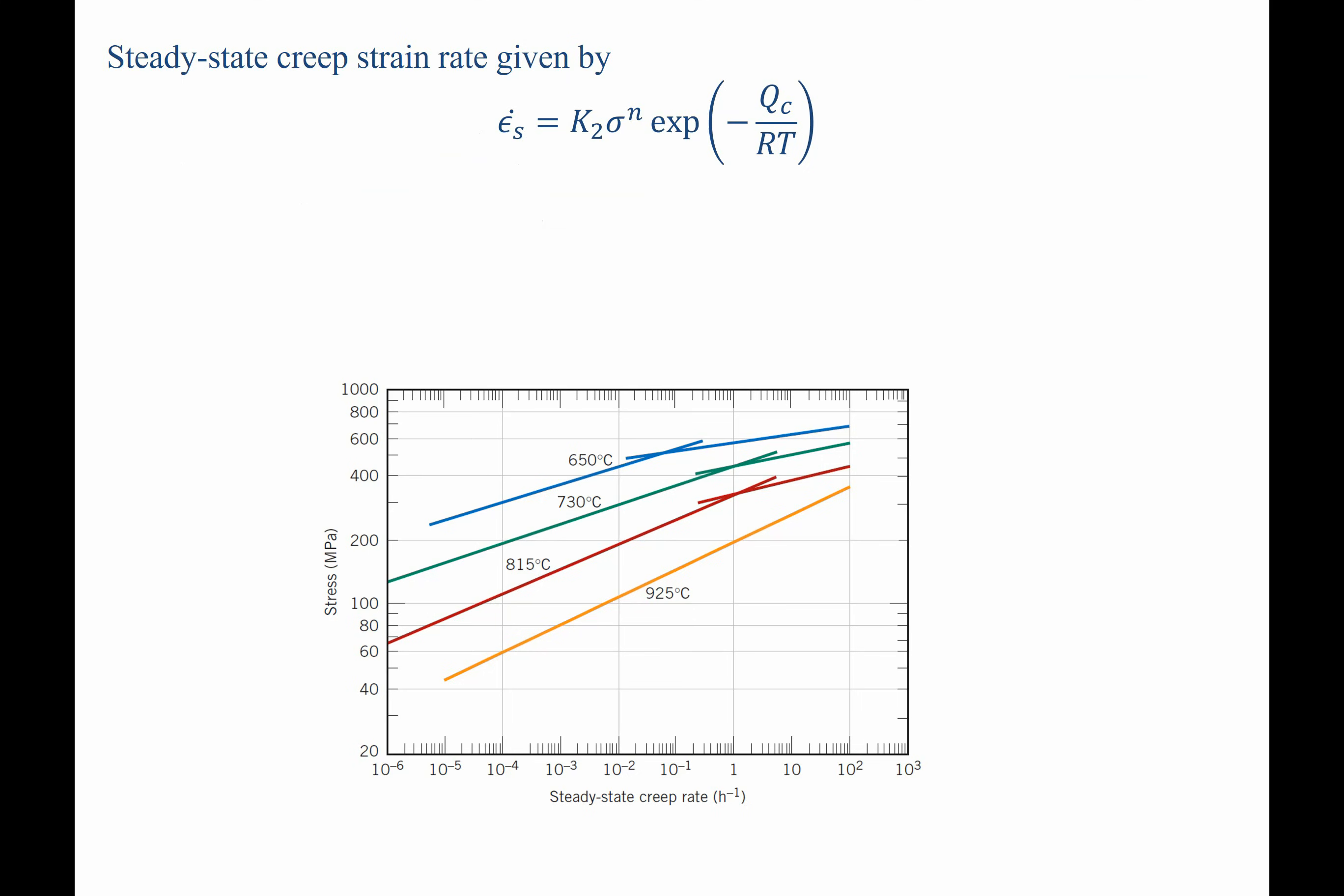We know that the steady state creep strain rate expression is given as follows. We have two terms in front of the exponential. We have the exponential term. Now fortunately, we know that k sub 2 and sigma raised to the n, none of that is temperature dependent. So we can replace it with a new pre-exponential variable. Let's call it k2 prime.